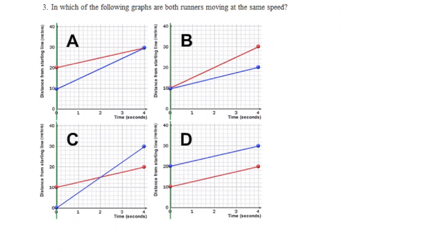In graph D, we have parallel lines. So in four seconds, they have both covered a distance of 10 meters. The person in red went from 10 to 20 meters. The person in blue went from 20 to 30 meters. The slope of the line indicates the rate of change. Parallel lines have the same slope, so we are changing the same distance for the same amount of given time. In D, the graphs are running at the same speed.